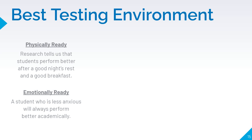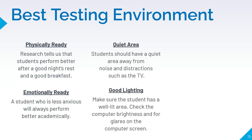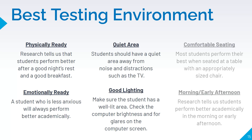Let's talk about the best testing environment. Research tells us that students perform better after a good night's rest and a good breakfast. A student who is less anxious will always perform better academically. Students should have a quiet area away from noise and distractions such as the TV. Make sure the student has a well-lit area and check the computer brightness and for glares on the screen. Most students perform their best when seated at a table with an appropriately sized chair. Research also tells us students perform better in the morning or early afternoon.